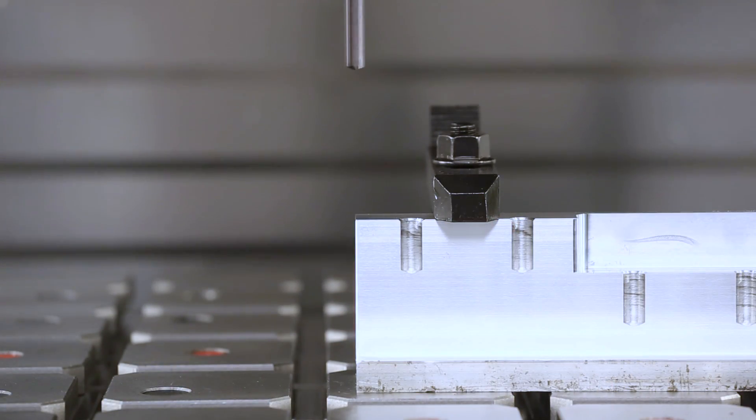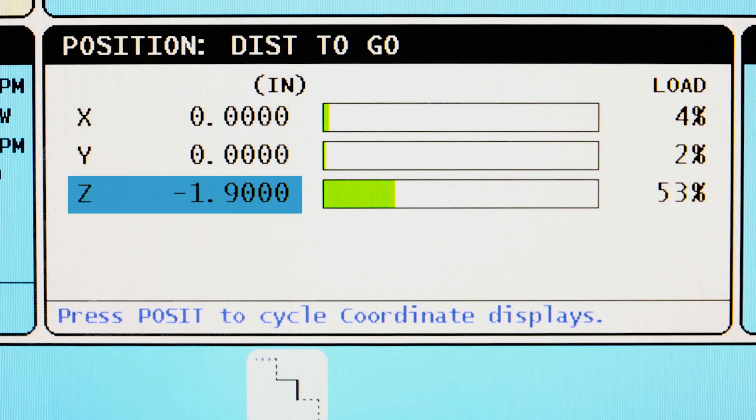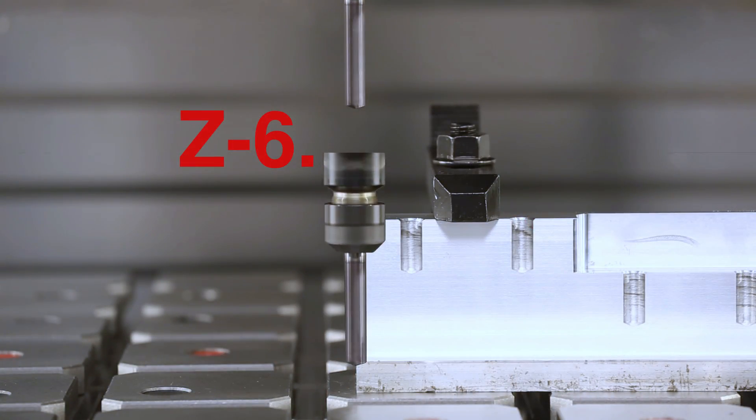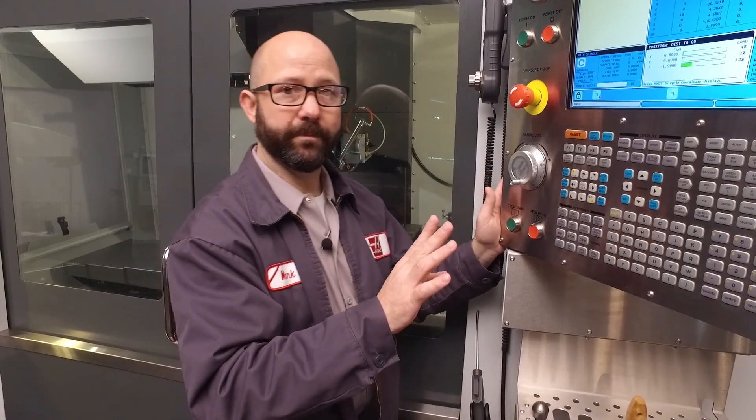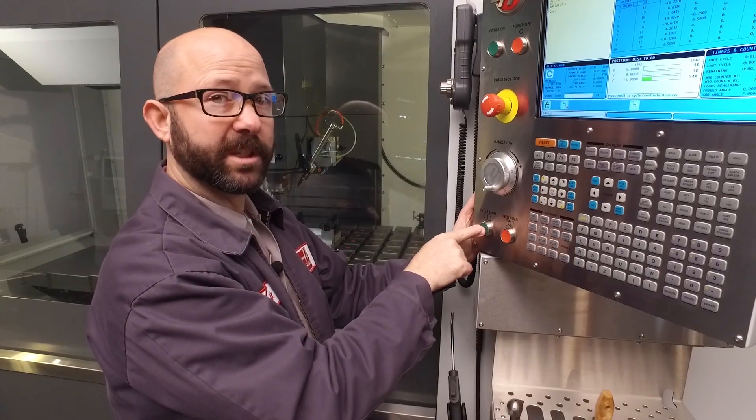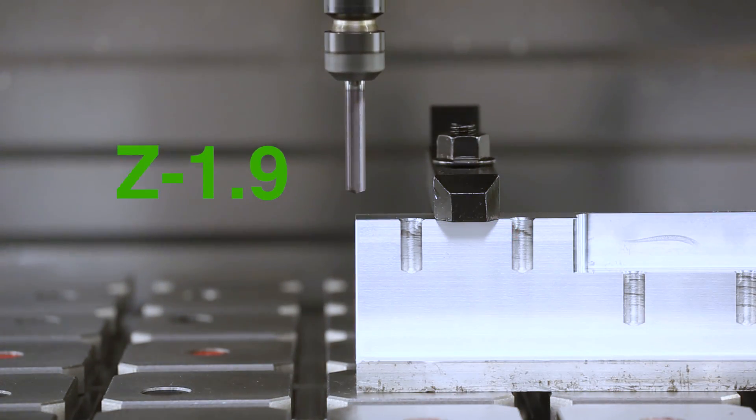My tool is coming down above my part and it says distance to go minus 1.9 inches. If it said something like distance to go Z minus 6 inches and I look at my part and think, if it goes down 6 inches, something terrible is going to happen. Well, I need to stop right there. I may have touched off my tool incorrectly or used the wrong work offset. So distance to go, Z minus 1.9. When I press the green button, my machine is going to move minus 1.9 inches. In this case, I'm fine.